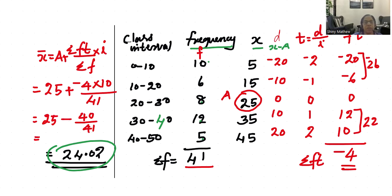25 minus 40 by 41. 40 divided by 41 equals 0.98, so 25 minus 0.98 equals 24.02. Same answer.